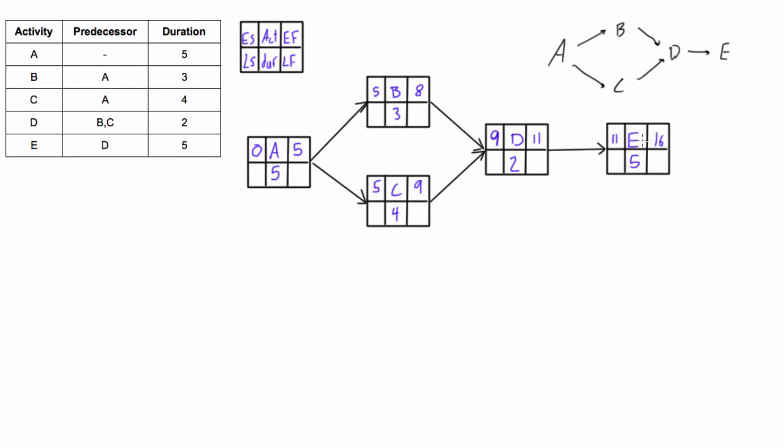Now we want to find the late start and the late finish, so we'll do that with the backwards pass. So we bring the early finish down on the last activity to the late finish and write it there. And then we just go through and we subtract the duration, so 16 minus 5 is 11. Now we bring the late start to the late finish of the preceding activity, so we have 11 and we subtract 2 and we get 9.